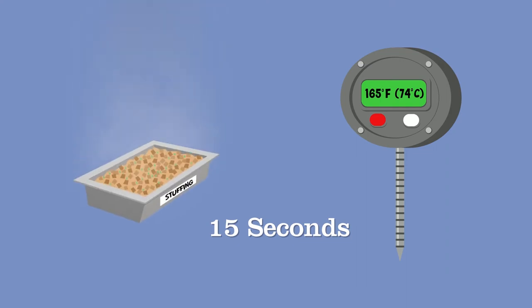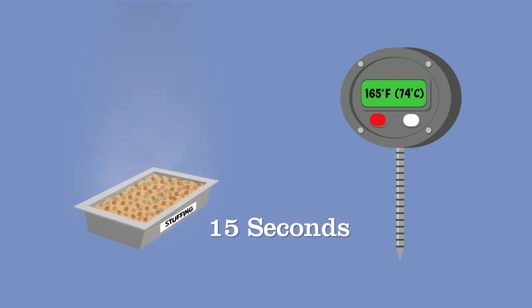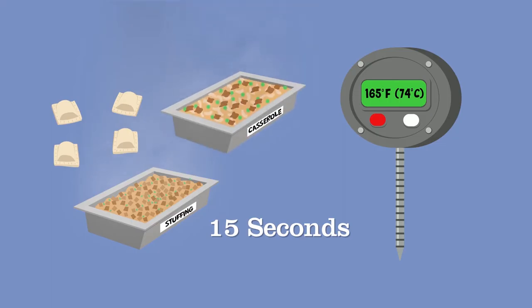Other foods that should be cooked to the same temperature include stuffing made with meat, fish, or poultry, and also stuffed pasta, meat, seafood, or poultry. And if you're making a dish that includes previously cooked TCS ingredients like a casserole, then that dish should be cooked to 165 degrees Fahrenheit (74 degrees Celsius) for 15 seconds.